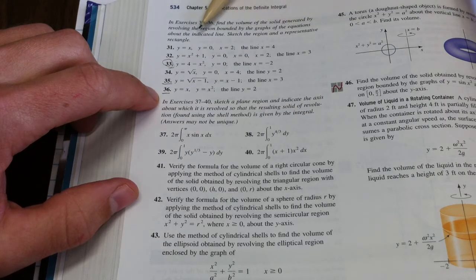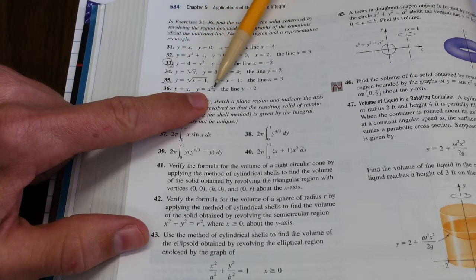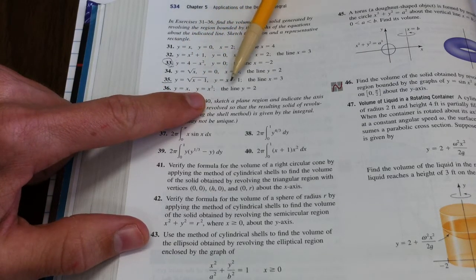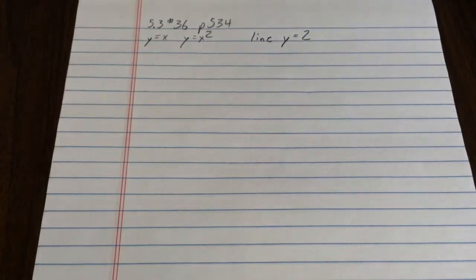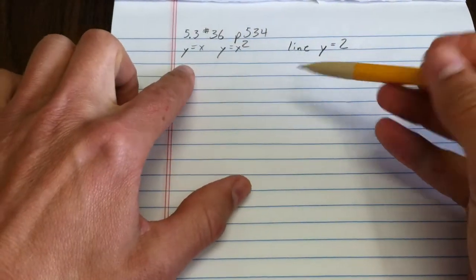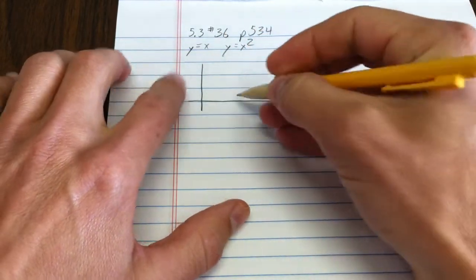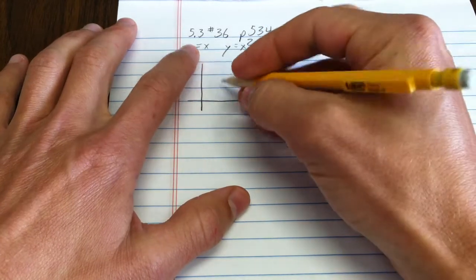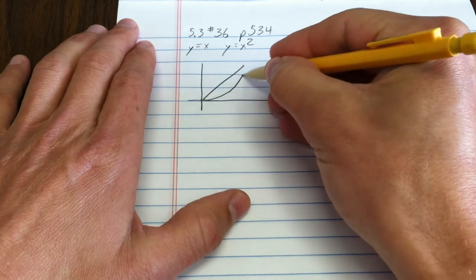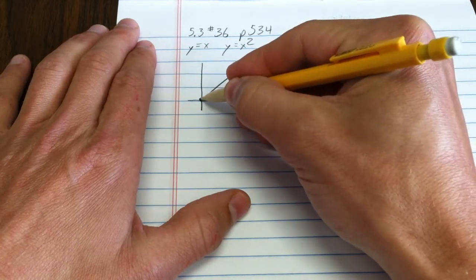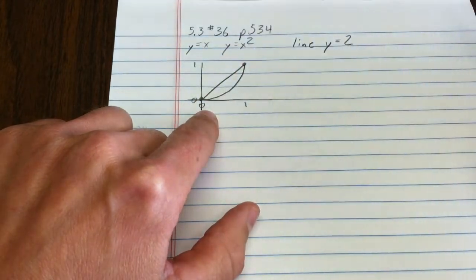Sketch the region and representative rectangle. The equations are y equals x and y equals x squared. The line to revolve around is y equals 2. Here I've written those down. If I was going to sketch that, y equals x looks like that. y equals x squared looks like that. Somehow I'm kind of expecting that to be relevant that they cross 0 and 1. That's actually the x-coordinate and the y-coordinate, which makes it easy.